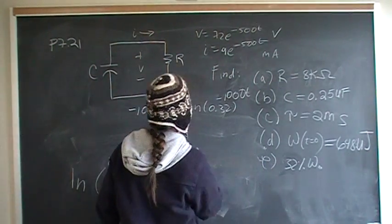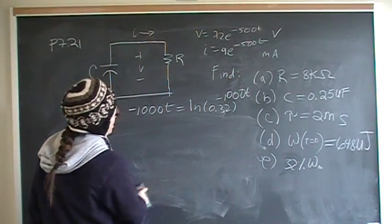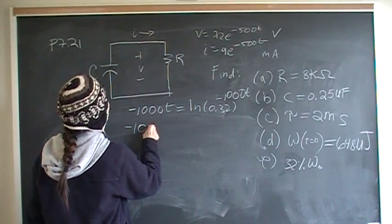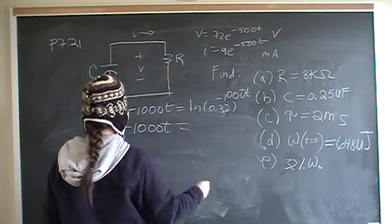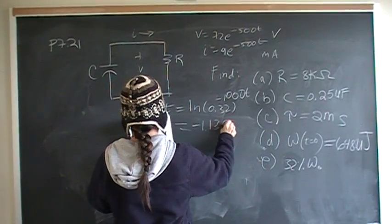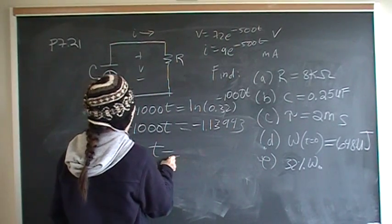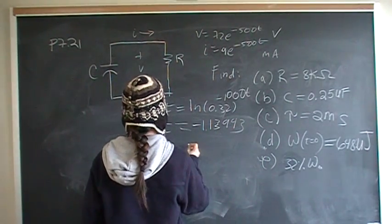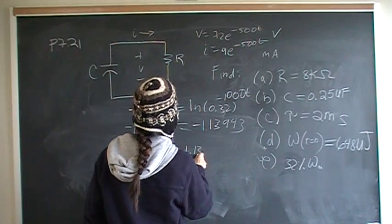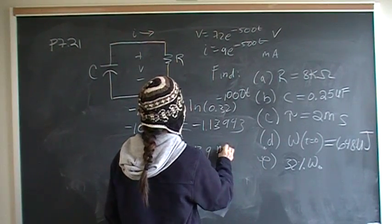And put that into your calculator. I do the work on the natural log and the exponentials a little bit more because not everybody is comfortable with that. Negative 1000t is equal to negative 1.13943. So therefore T is going to be 1.139 microseconds.